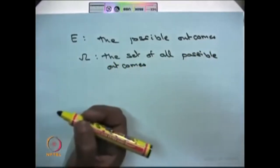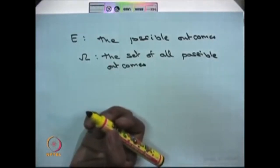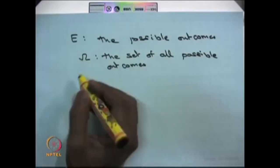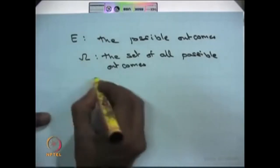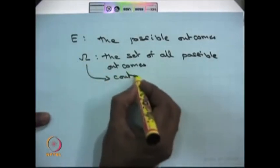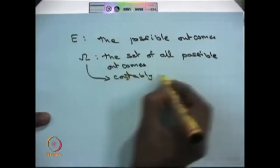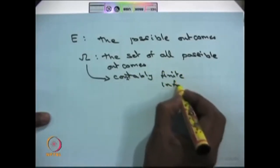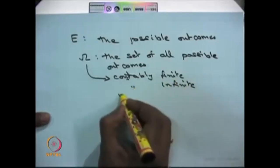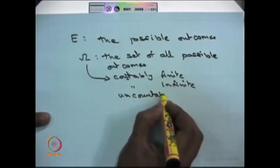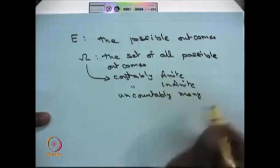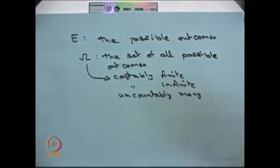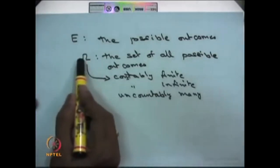The outcomes could be numerals or non-numerals, and the set omega could be countably finite, countably infinite, or uncountably many. The way you choose the random experiment and collect the possible outcomes — that collection is put into the set called omega.